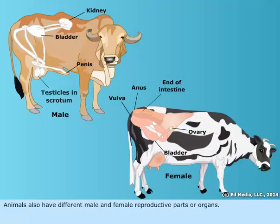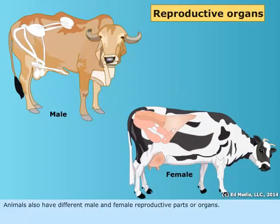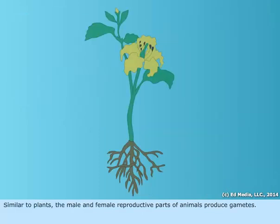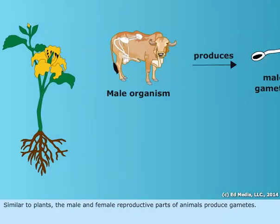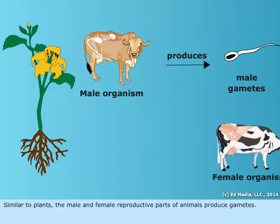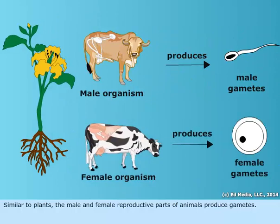Animals also have different male and female reproductive parts, or organs. Similar to plants, the male and female reproductive parts of animals produce gametes.